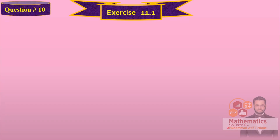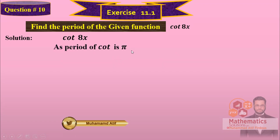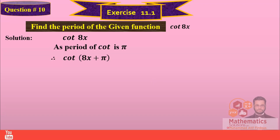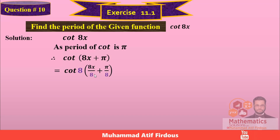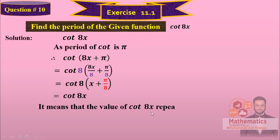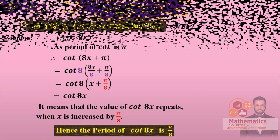Next question number 10: find the period of the given function cot(8x). The period of cotangent is pi, just like tangent. So add pi in the angle. To make the coefficient of x equal to 1, take 8 as common factor. So 8 cancels, giving x + pi/8. The second term is the period. Hence the period of cot(8x) is pi/8.